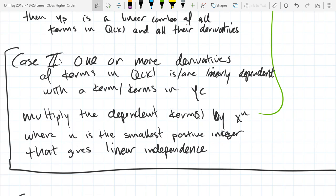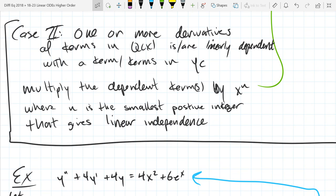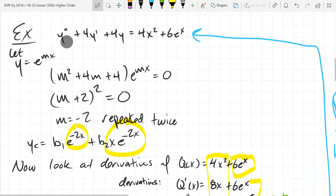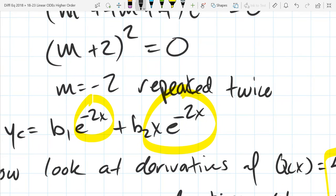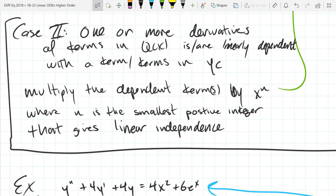Most of the time it's going to be X to the first power. Occasionally it might be X squared. You're going to multiply the dependent terms by X to the N where N is the smallest positive integer that gives linear independence. We actually already did case 2 in the homogeneous solution we just got. That extra X that we just brought in right there. That was X to the first power. We've already done this before. It's the same idea.